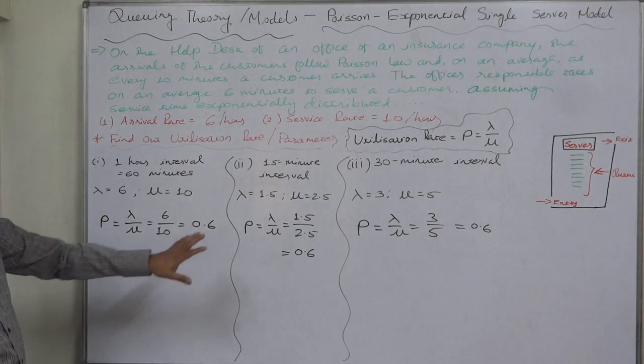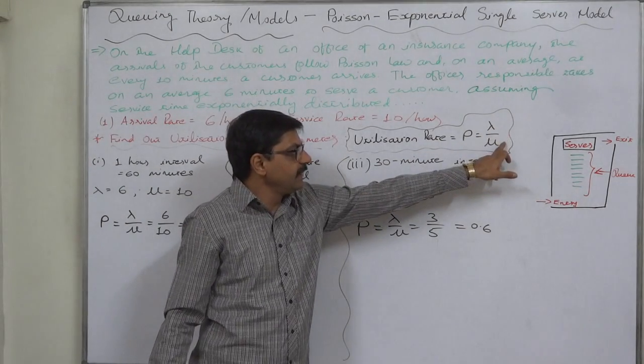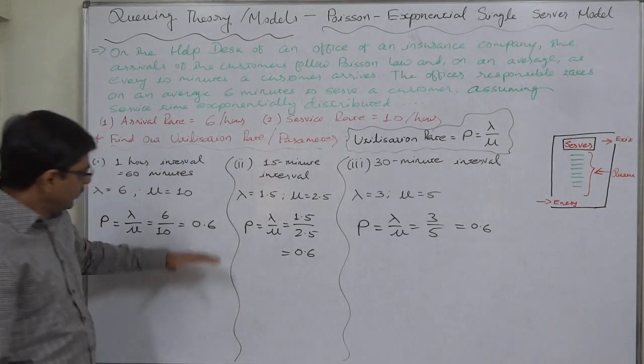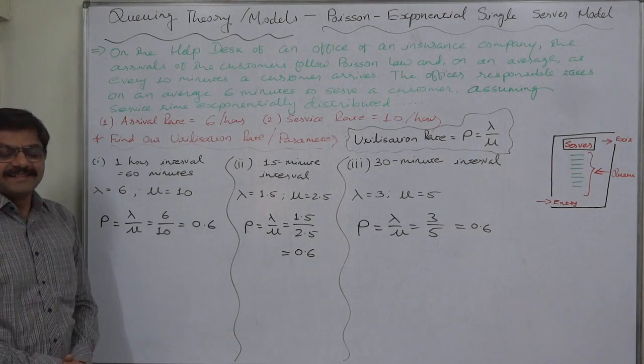So ultimately, we calculated utilization rate rho equals to lambda, arrival rate, divided by mu, service rate, and that is 0.6 in our example. That's it, thank you very much.